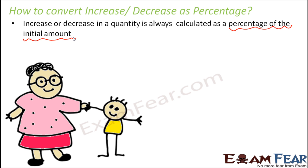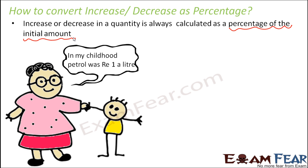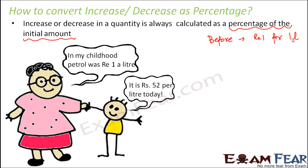Here we see a mother-daughter duo. The mother says that in her childhood, petrol was rupee 1 per liter — so the cost of petrol used to be rupee 1 for 1 liter. This was the before scenario. And then the daughter says that it is rupees 52 per liter today. So the price has changed. What has happened — whether the quantity has increased or decreased? The quantity here is the price, and the price is undergoing a change.